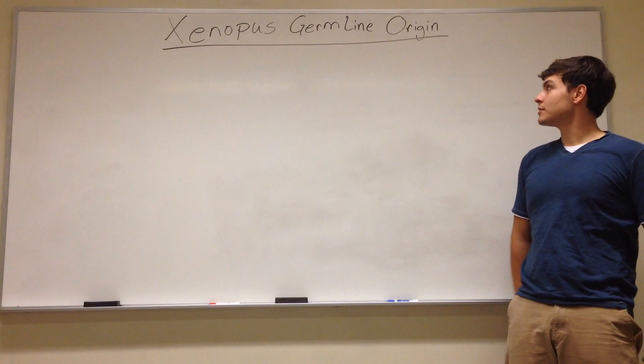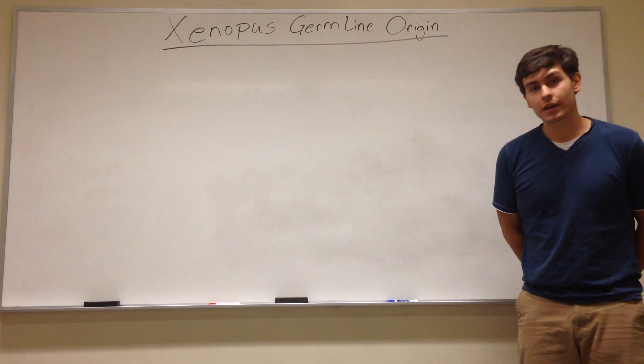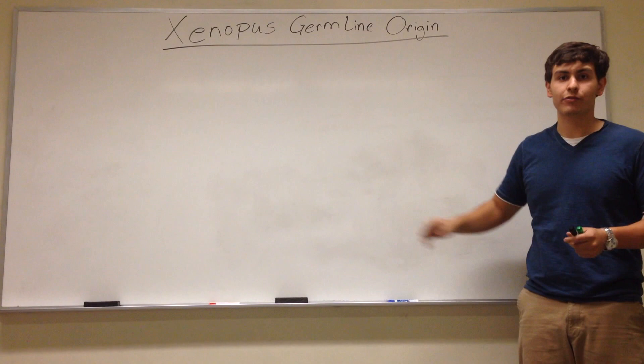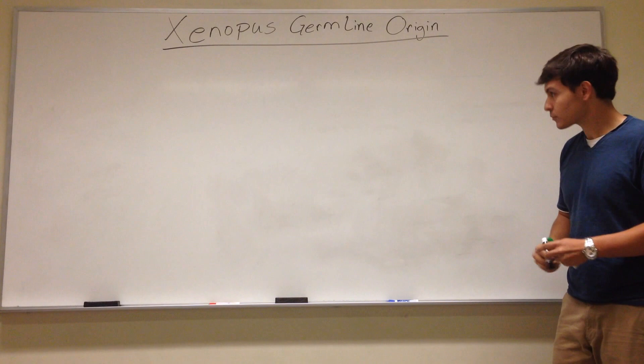Hello my name is David Eberts and we're gonna take a trip down Xenopus germline origin way. I'm gonna start at the very beginning with the oocyte and hopefully make our way to the mid-blastular transition where gastrulation starts to begin and we're done with the formation of the germline. From there on it's mainly formation of the full embryo. But let's begin here.